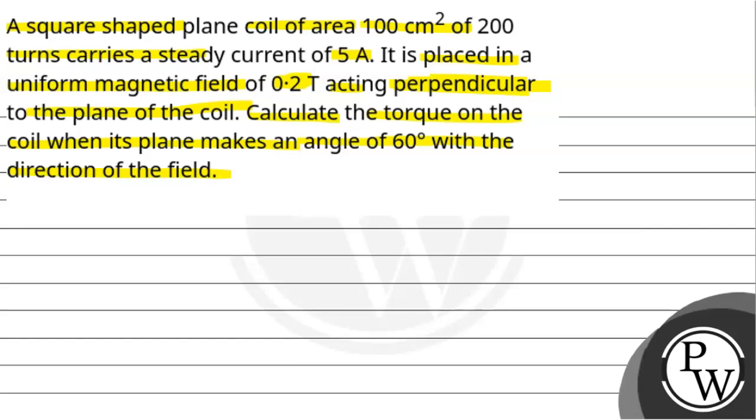So now we are asking that square-shaped plane, whose area A is equal to 100 cm square and carries the current of I is equal to 5 ampere. It is placed in uniform magnetic field, whose magnitude is 0.2 tesla and it is perpendicular to the plane of the coil. That means area vector and magnetic field vector, in both there is 90 degree angle.